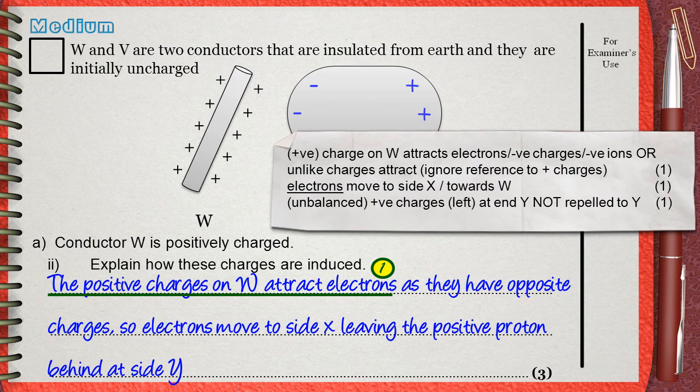The second mark is on saying electrons will move to side X, and this is exactly what we said, so electrons move to side X. The third mark is awarded for positive charges left behind,